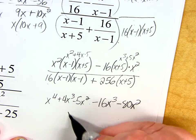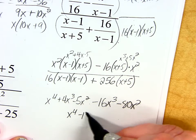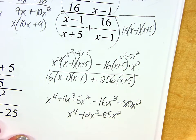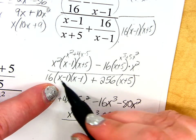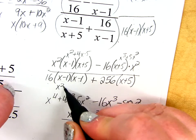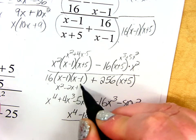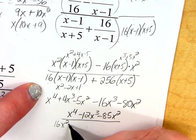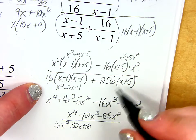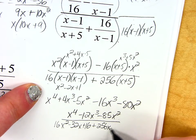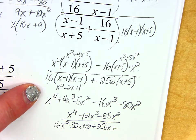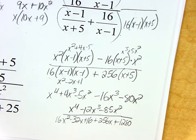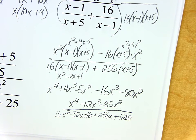So, there's my numerator. Let's go ahead and combine like terms. So, I've got x to the 4th minus 12x to the 3rd and a minus 85x squared. All right. Let's go ahead and deal with our denominators now. So, I have x minus 1 times x minus 1. So, that's x squared minus 2x plus 1 times 16. 16x squared minus 32x plus 16. Okay. And then, over here, add 256x plus whatever 256 times 5 is. 1280? You guys still with me? Yeah? We're all right? Okay.